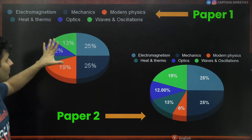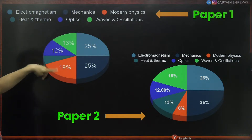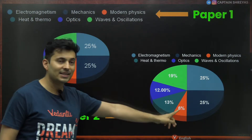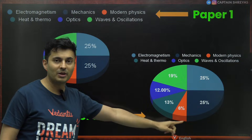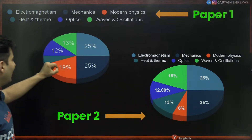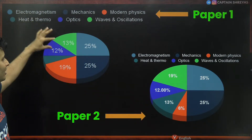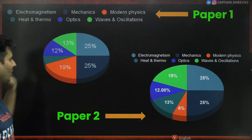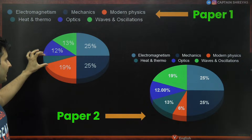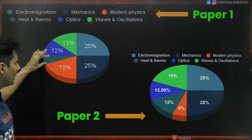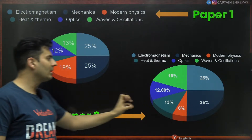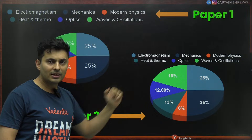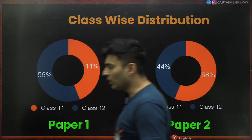In Paper 1, a very similar distribution was seen for mechanics and electromagnetism. However, modern physics was 19% in Paper 1 versus only 6% in Paper 2. Optics was roughly 12% in both. Heat and thermodynamics was less in Paper 1 but slightly more in Paper 2 — a significant difference.